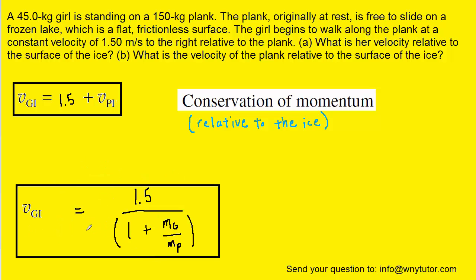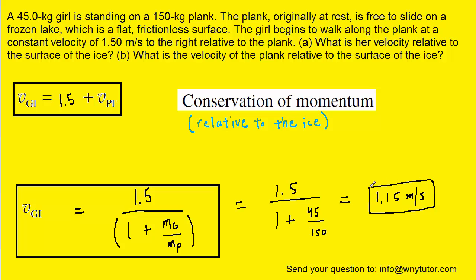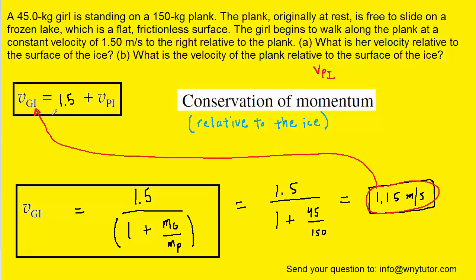Since we have v gi multiplied by that large term, we divide both sides by that term to isolate v gi. We now have the velocity of the girl relative to the ice in a neat form. Plugging in the mass of the girl and the mass of the plank gives the answer to Part A: 1.15 meters per second. For Part B, which asks for the velocity of the plank relative to the ice (v sub pi), we can substitute v gi into the earlier equation and solve.